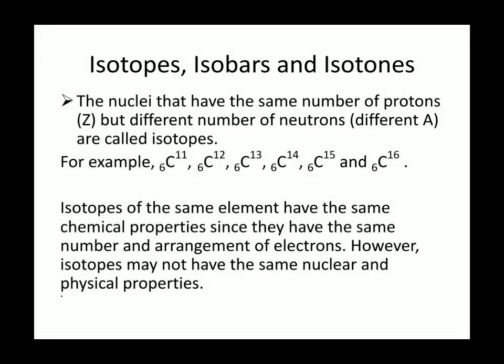Now let's take a look at what isotopes, isobars and isotones are. First let's see what isotopes are. The nuclei that have the same number of protons, but different number of neutrons, they are called isotopes. For example, carbon have isotopes: carbon 11, C12, C13, C14, C15, and C16.